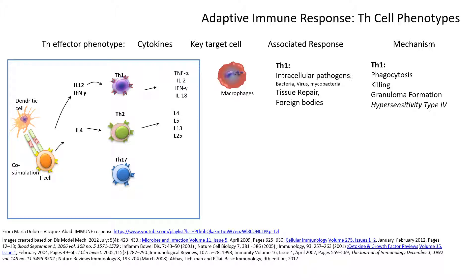In another interaction with different co-stimulatory factors and different T cell receptors to those epitopes, an interleukin-4 environment will differentiate the T helper cell into a TH2 phenotype, characterized by the production of cytokines including interleukin-4, interleukin-5, interleukin-13, and interleukin-25.